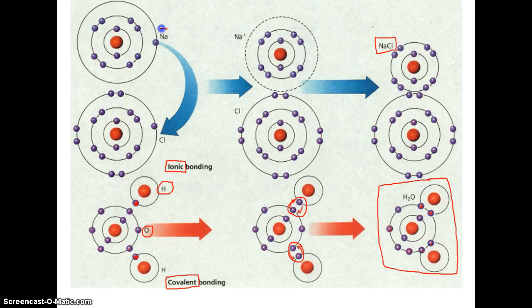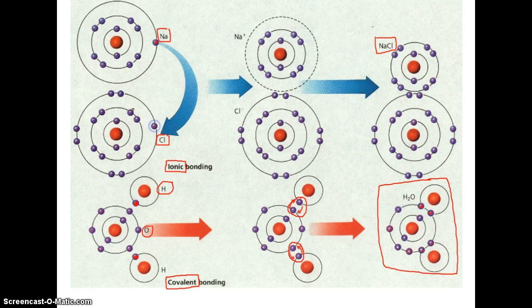Sodium all by itself has one electron shell with only one electron in it. And chlorine has an electron shell with seven electrons in it — it really, really badly wants to have eight. So there's an easy solution. When sodium just has this one lone electron, it would actually rather get rid of it, because if it gets rid of that electron, its now-outermost shell has eight electrons.